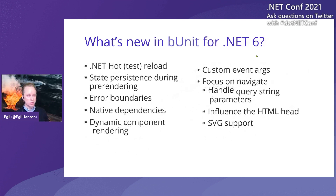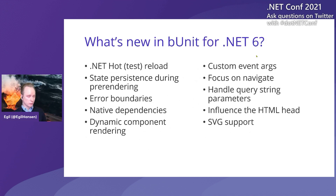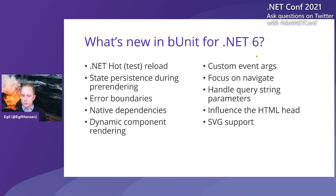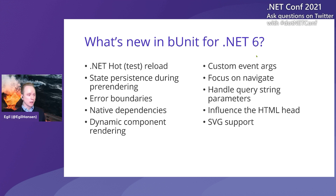If we throw those things away, we're left with the things that bUnit should support. It turns out that bUnit more or less already supported those things before .NET 6 even shipped — a testament to how the Blazor team was able to deliver a .NET 6 version without breaking the internal parts of Blazor that bUnit relies on, even for a new major release.